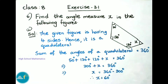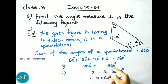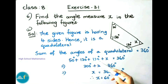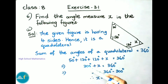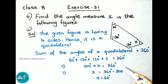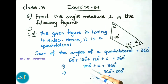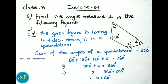Now we have to find x. Since the sum of the angles of a quadrilateral is 360 degrees, we add all four angles: 50 + 130 + 120 + x = 360 degrees. That gives 300 + x = 360 degrees. Transposing, x = 360 - 300 = 60 degrees. Therefore x = 60 degrees.